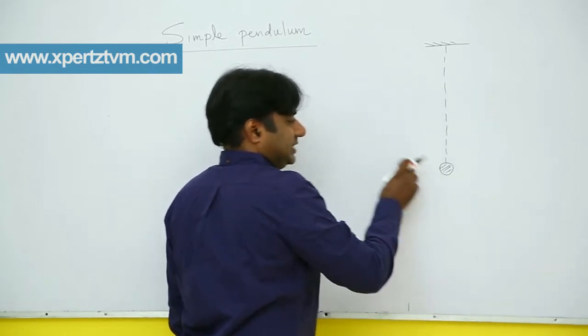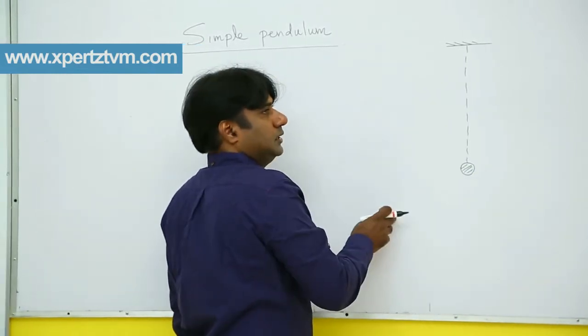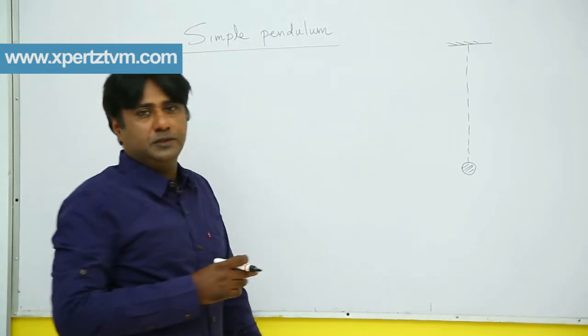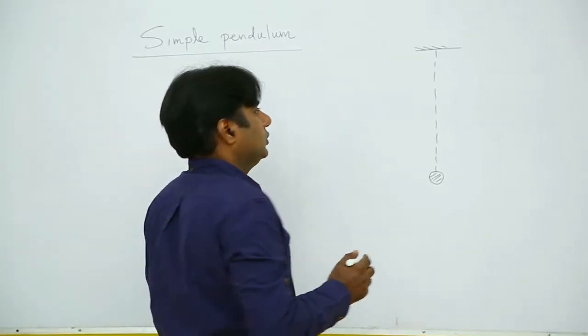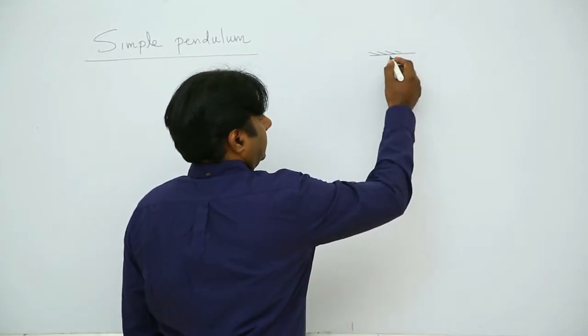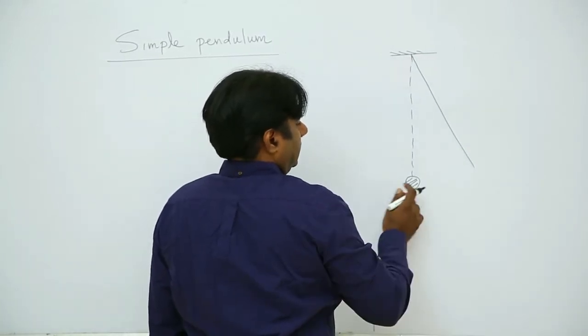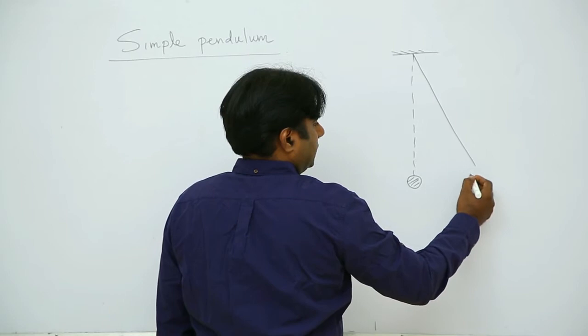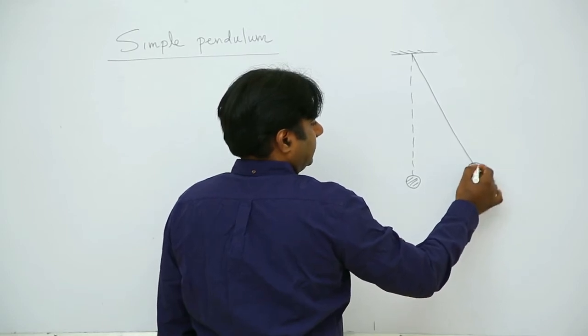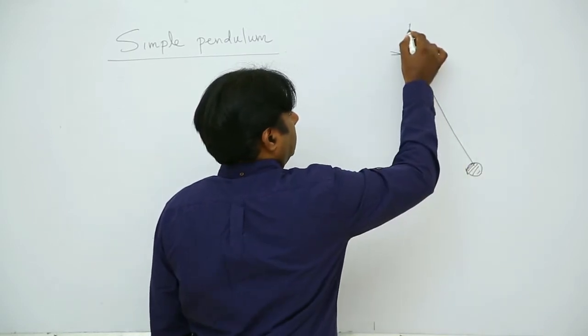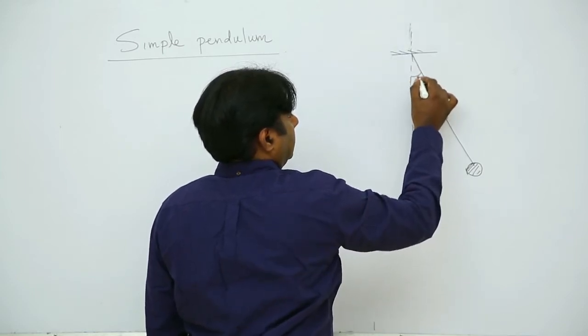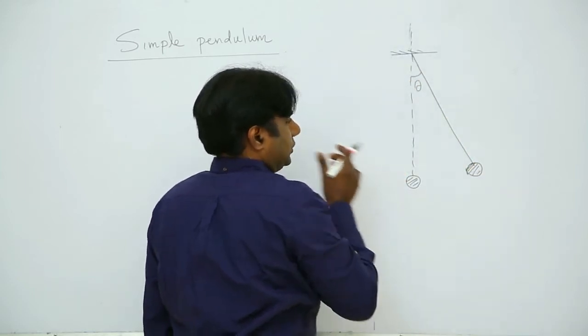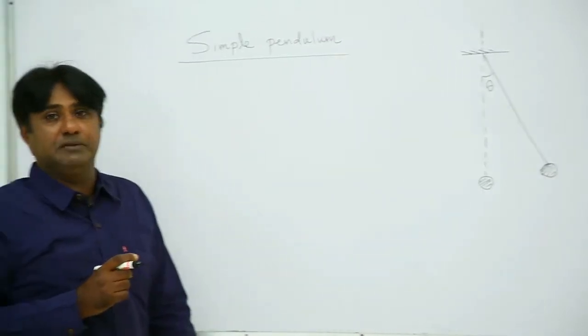It is going to be an angular SHM because it is going to move in an arc. We are going to derive the expression for time period of oscillation of this simple pendulum. Suppose initially at an instant position of the bob is like this. This is a vertical direction, vertical.